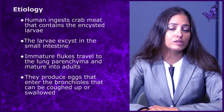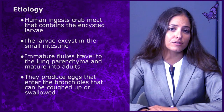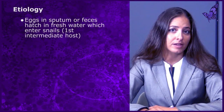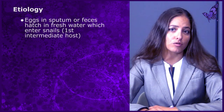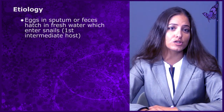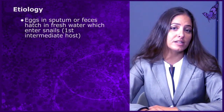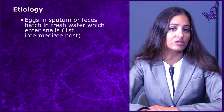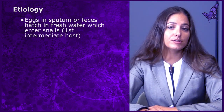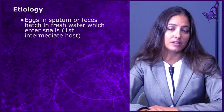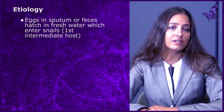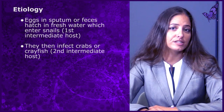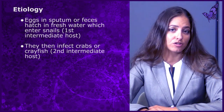In the lungs, the flukes produce eggs which enter into the bronchioles. These eggs can then be coughed up and/or swallowed. Eggs that exit the human host in feces or sputum may hatch in fresh water and become miracidia. Miracidia can then infect snails, which are the first intermediate host. The miracidia mature within the snail and become cercariae. Cercariae can then invade crustaceans, including crab and crawfish, which serve as the second intermediate host.